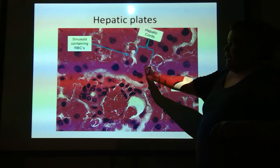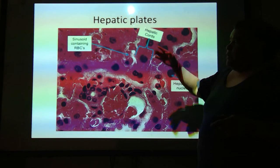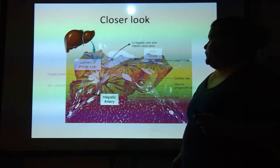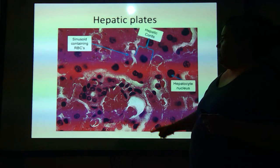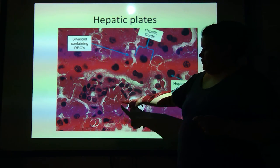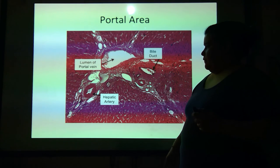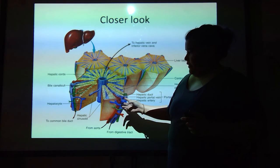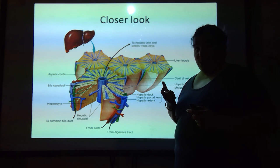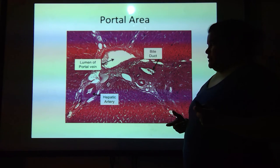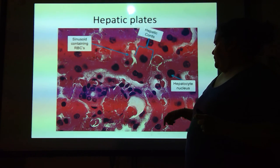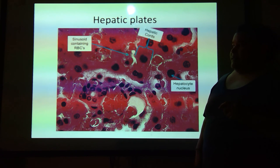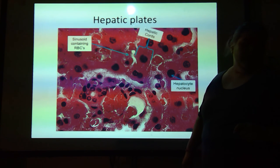Here's one hepatic cord — here's one of those walls. See the blood here? The blood there? Remember this sinusoid — where they combine together, that's where the sinusoid is. That's why you see blood cells there. And then this is one of the hepatocyte nuclei — one of the liver cell's nuclei.